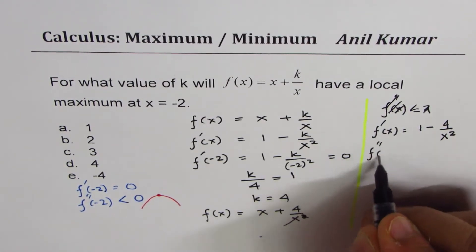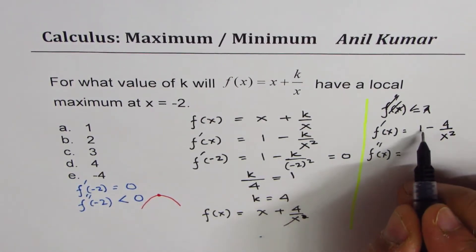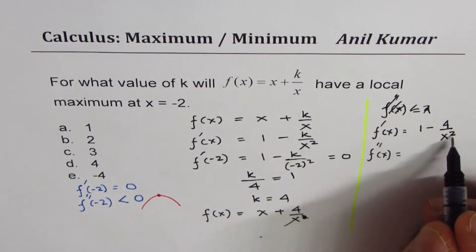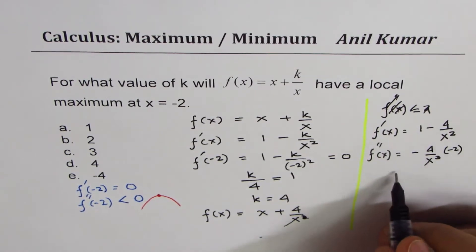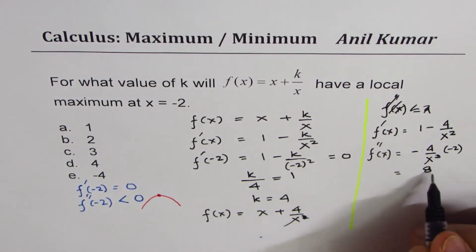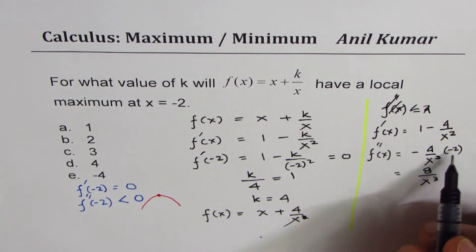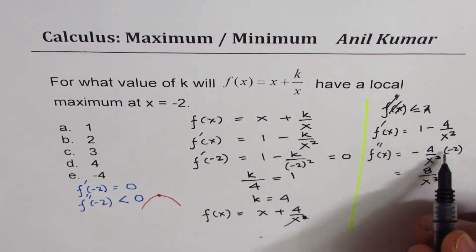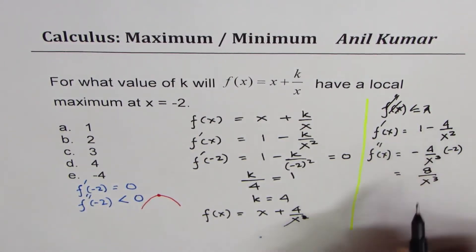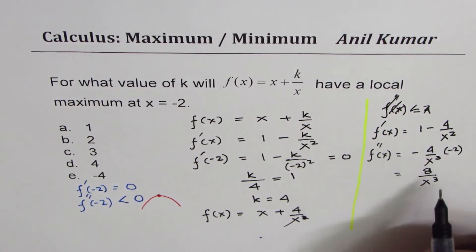Now the second derivative of this function will be, derivative of 1 is 0, derivative of 4/x² will give us -4/x³ times -2, or it will give us 8/x³. Because you could write x² as x to the power of -2, that gives you -2 times 4/x³.